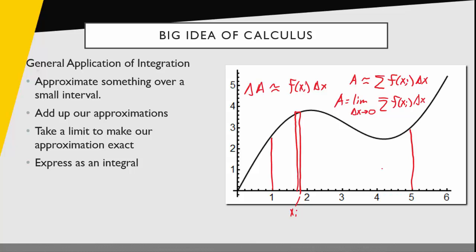And that should give me the exact area under the curve. And lastly we express the integral. Because we recognize this piece to be the definition of the definite integral. Therefore now we can say that the area is the integral from 1 to 5 of f of x dx. So what I want you to focus on is these bigger themes: approximating an interval, adding up the approximations, taking the limit, expressing as an integral.